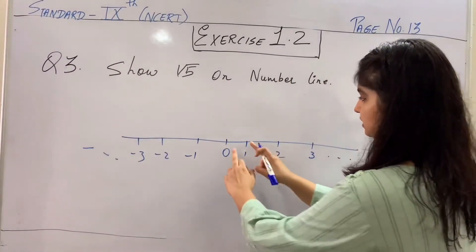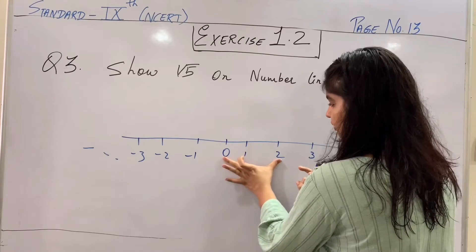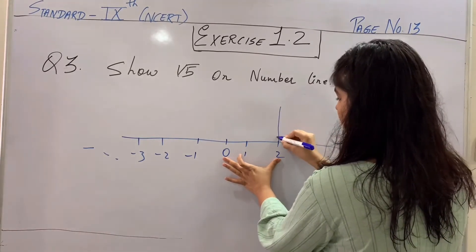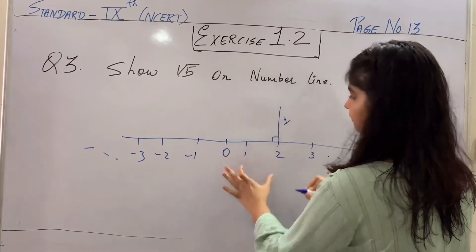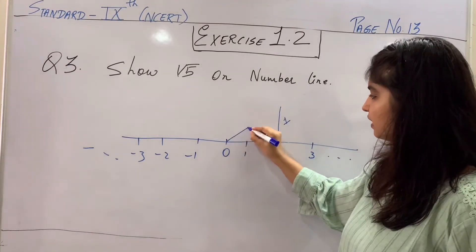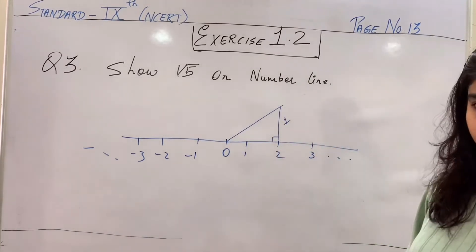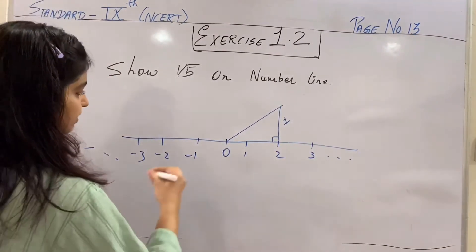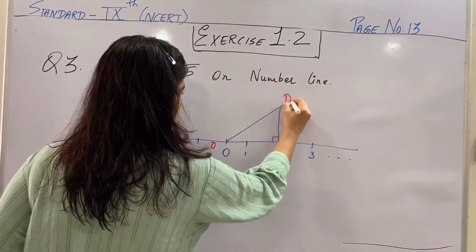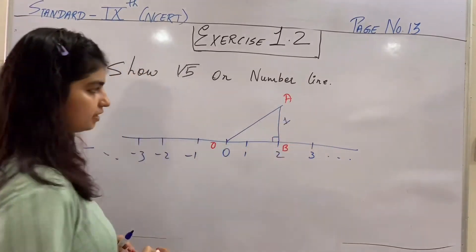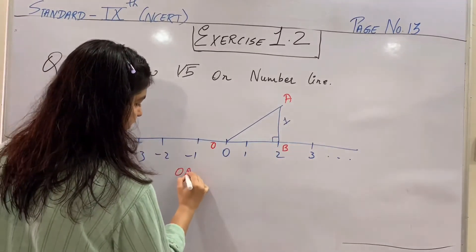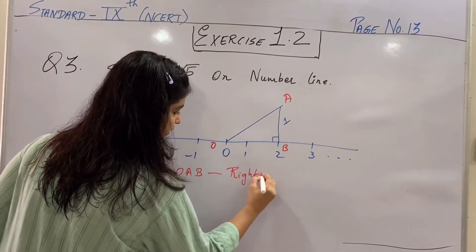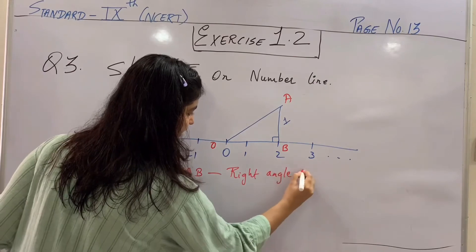So this is your 2 unit. Unit 1 and unit 2. Agar unit 2 se if you extend a perpendicular of 1 unit, you will get this triangle as right angle triangle. Usko naam de dete hain. Suppose, if you gave the name of this particular triangle as OAB. OAB is a right angle triangle.